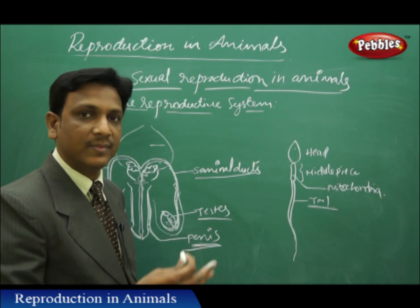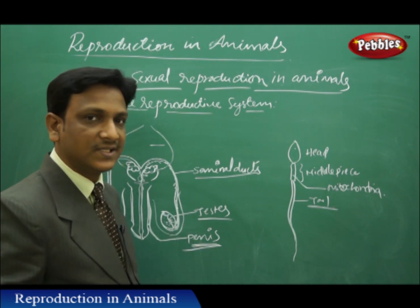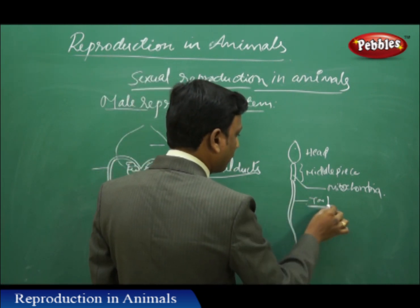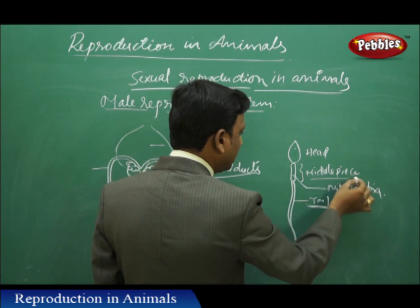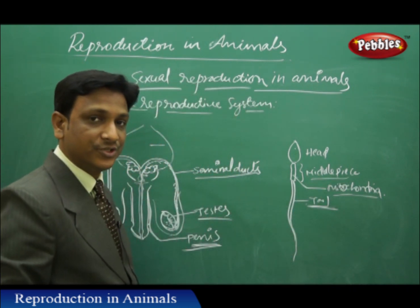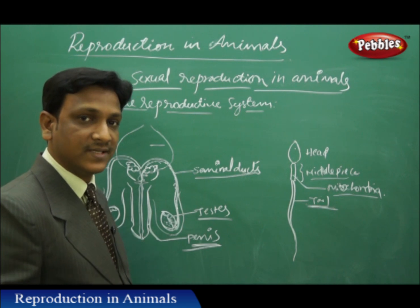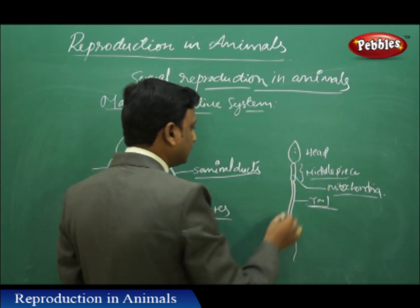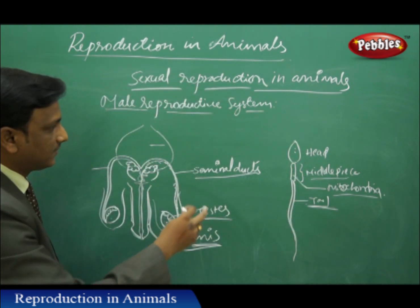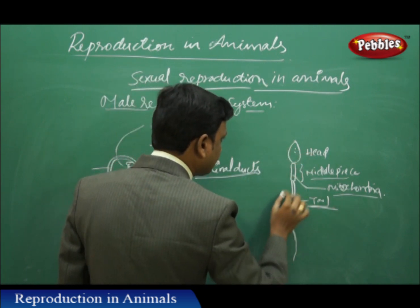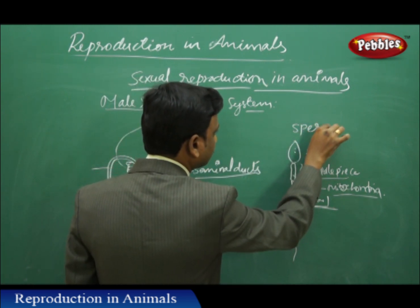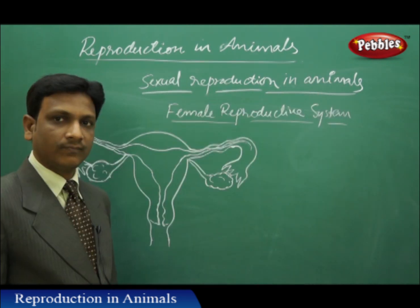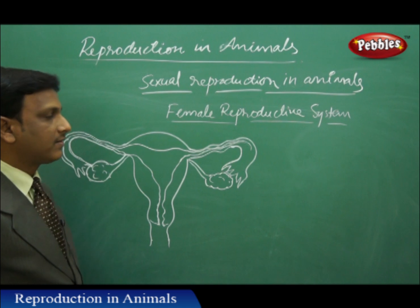The sperm cell looks like a tadpole. It has to travel in the female reproductive system to reach the female gamete, so it has a tail for movement. It has a middle piece which contains mitochondria to generate energy so it can move and reach the female gamete. It also has a head. These are the different parts of the sperm cell.